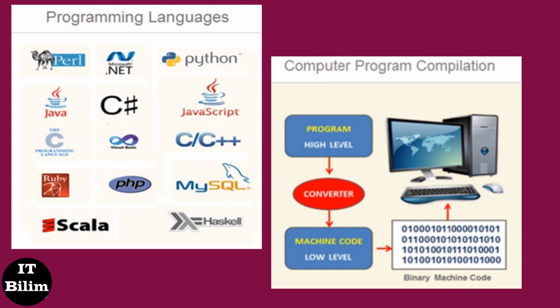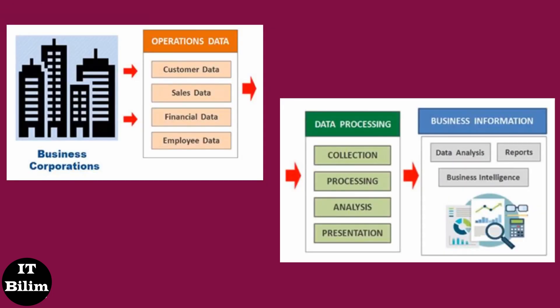The CPU executes the program instructions one by one. The computer systems are versatile machines and can be used to perform a number of operations. For example, a company might use the computer system for managing employee database, customer database, inventory management, billing, record keeping, payroll processing, accounting, and many such applications. In order to use the computer system for any database operations, a DBMS (database management system) software is required.